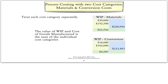When there is more than one cost category — for example, a category for materials and a category for conversion — it's important to do the equivalent units and cost calculations for each cost category separately. At the end, you value work-in-process and cost of goods manufactured by adding the two accounts together.